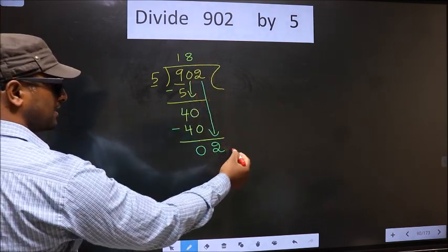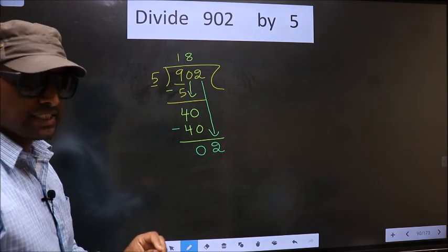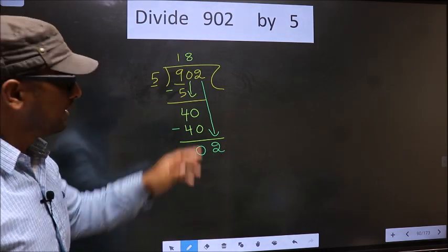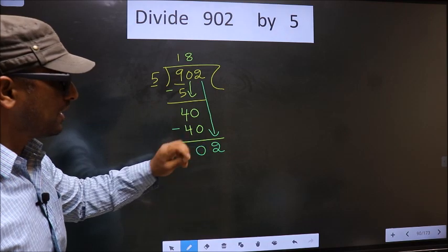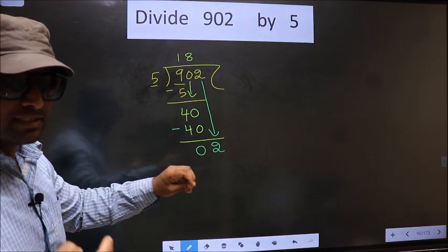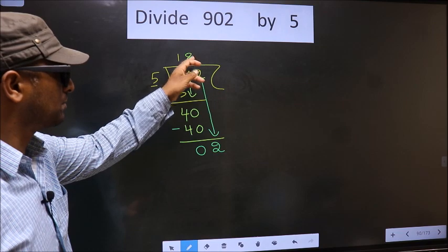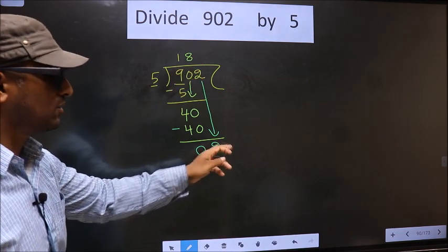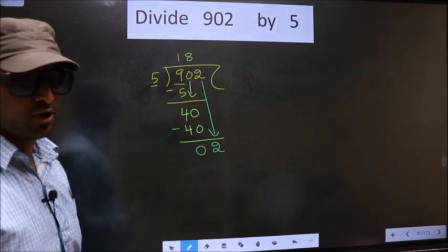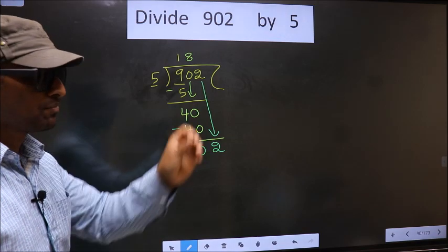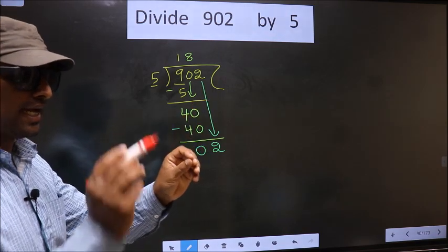Just now you brought the number down, and in the same step you want to put a dot and take 0, which is wrong. I repeat: bringing the number down and putting a dot and taking 0, both at the same step, you are not supposed to do.